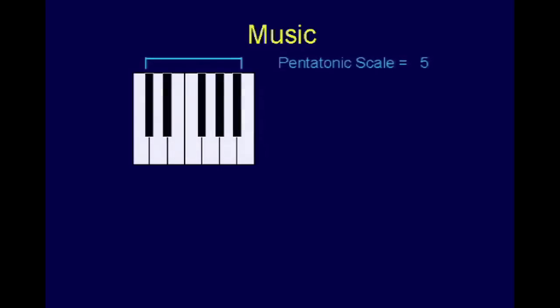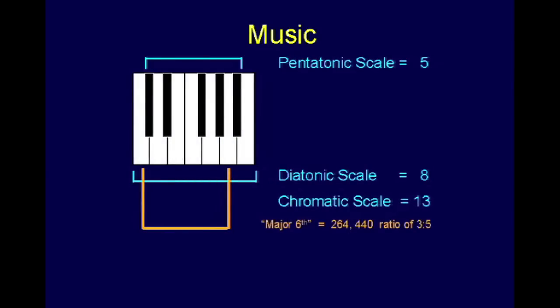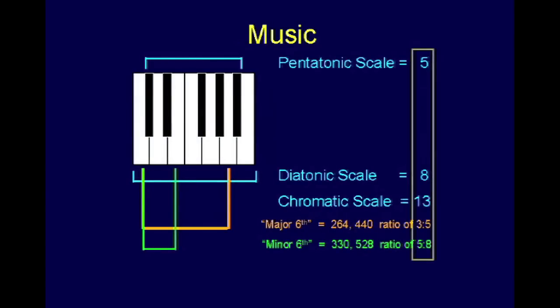Let's talk about music. You've got five keys that are the pentatonic scale, eight that are called the diatonic scale — those are Fibonacci numbers. Put them both together, you've got a chromatic scale: 8 and 5. A major sixth, which is considered beautiful for strange reasons, is a ratio of frequencies — that's three to five. A minor sixth is similarly a ratio — these are all Fibonacci numbers, all through music. Certain chords work and some don't, and part of the reason is Fibonacci numbers undergirding that whole analysis.